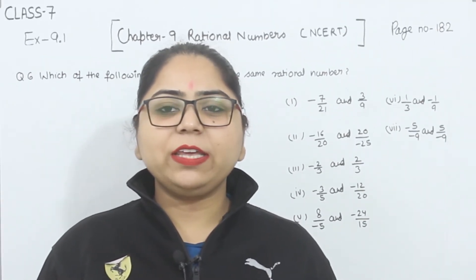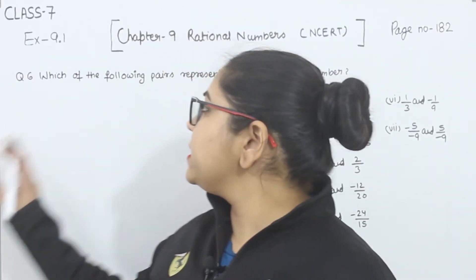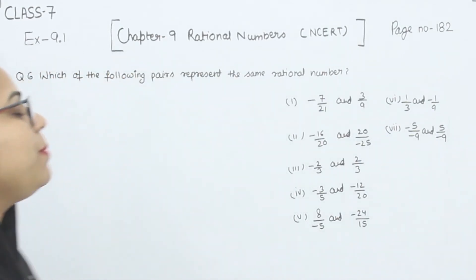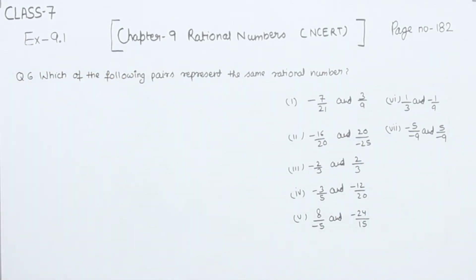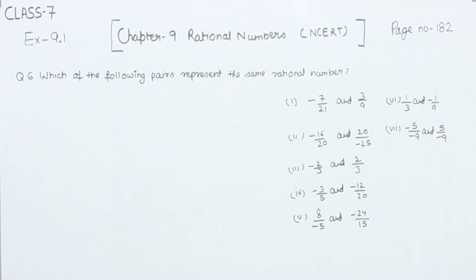Hello everyone, this is Preeti. We are here with another question of exercise 9.1, page number 182, question number 6: Which of the following pairs represents the same rational number? We have been given 8 parts in the question, and we are going to start with part 1.